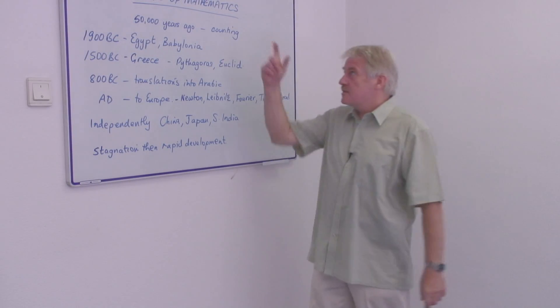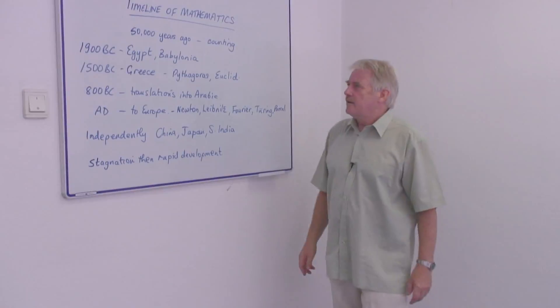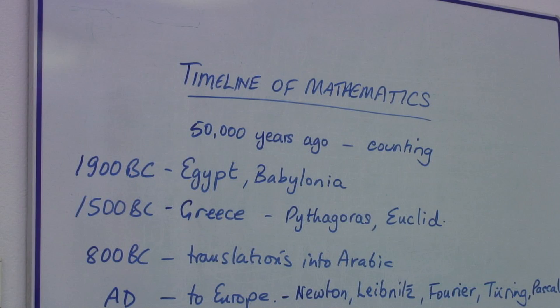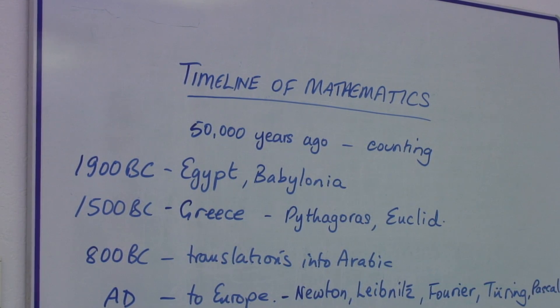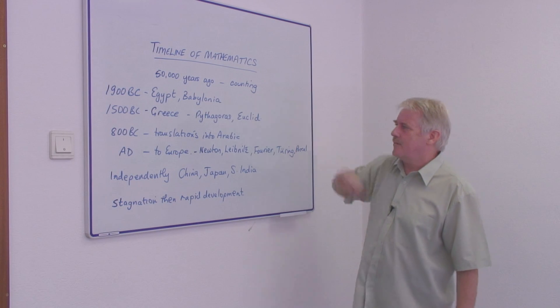Hello, I'm Steve Jones and I'm going to tell you something about the timeline of mathematics. Now mathematics started very early on with counting 50,000 years ago. Counting was a very basic fundamental beginning of mathematics.